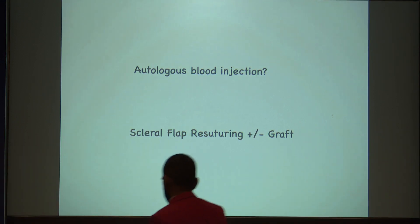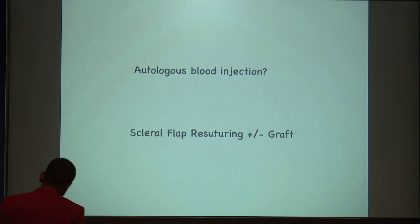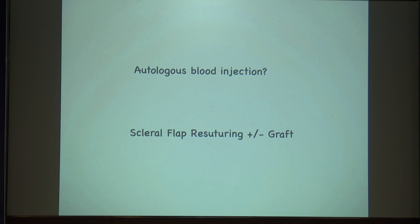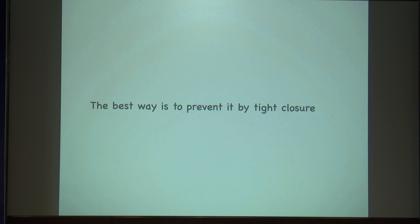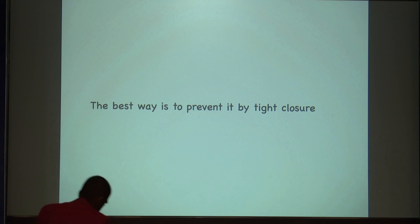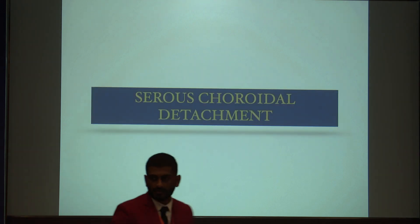Ultimately, if nothing works, you will have to do flap suturing with or without graft. When you keep a graft, just don't tighten it tightly — suture it in the limbal area. The best way is to prevent it by tight closure. You can use a releasable suture or tight nylon sutures, and then later on do a laser suture lysis.